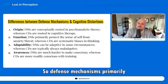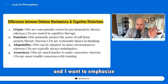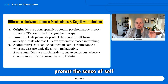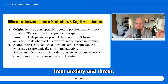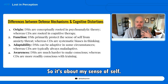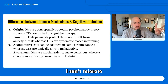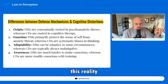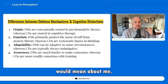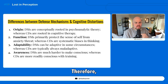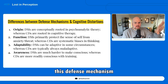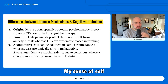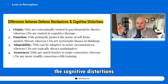Difference in function: defense mechanisms primarily — and I want to emphasize the word primarily — protect the sense of self from anxiety and threat. It's about my sense of self. I can't tolerate what this situation, this choice, this reality would mean about me, and therefore this defense mechanism is used to protect me and my sense of self.